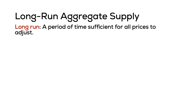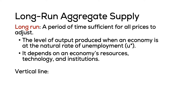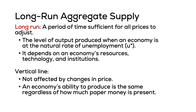In the long run, all prices adjust simultaneously. If the price of your input or your output increases, you're able to adjust and there's no incentive to change your production behavior. When all prices are adjustable, production does not change.